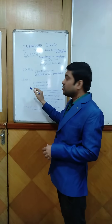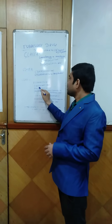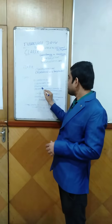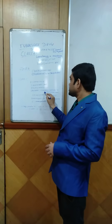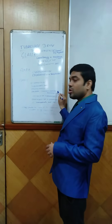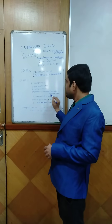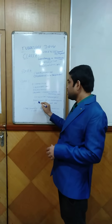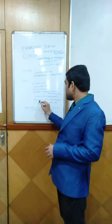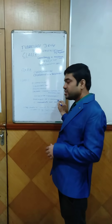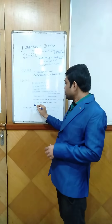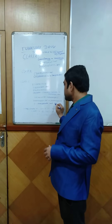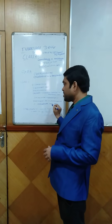In Class C, the drugs are ethambutol, delamanid, pyrazinamide, imipenem-cilastatin or meropenem, amikacin or streptomycin, ethionamide or prothionamide, and para-aminosalicylic acid, that is PAS.